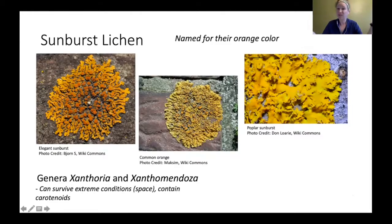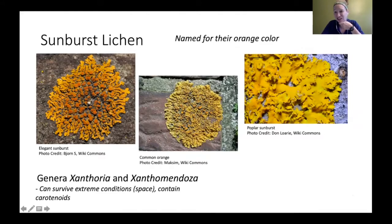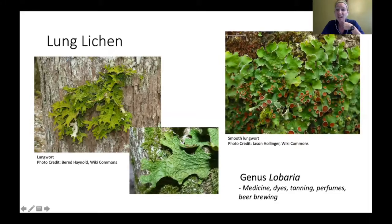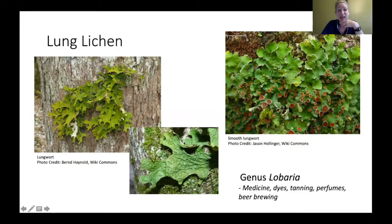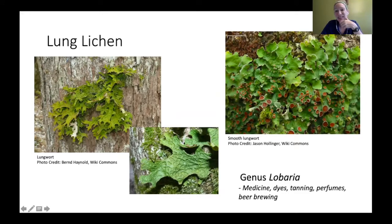Sunburst lichen are named for their orange color, caused by carotenoids. There's poplar sunburst — mainly on poplar trees — and the elegant sunburst, which is the lichen that was taken to the International Space Station to test survival in extreme conditions. Lung lichen, in the genus Lobaria, tend to be much larger than most foliose lichen and are used for medicines, dyes, tanning, perfumes, and even beer brewing.